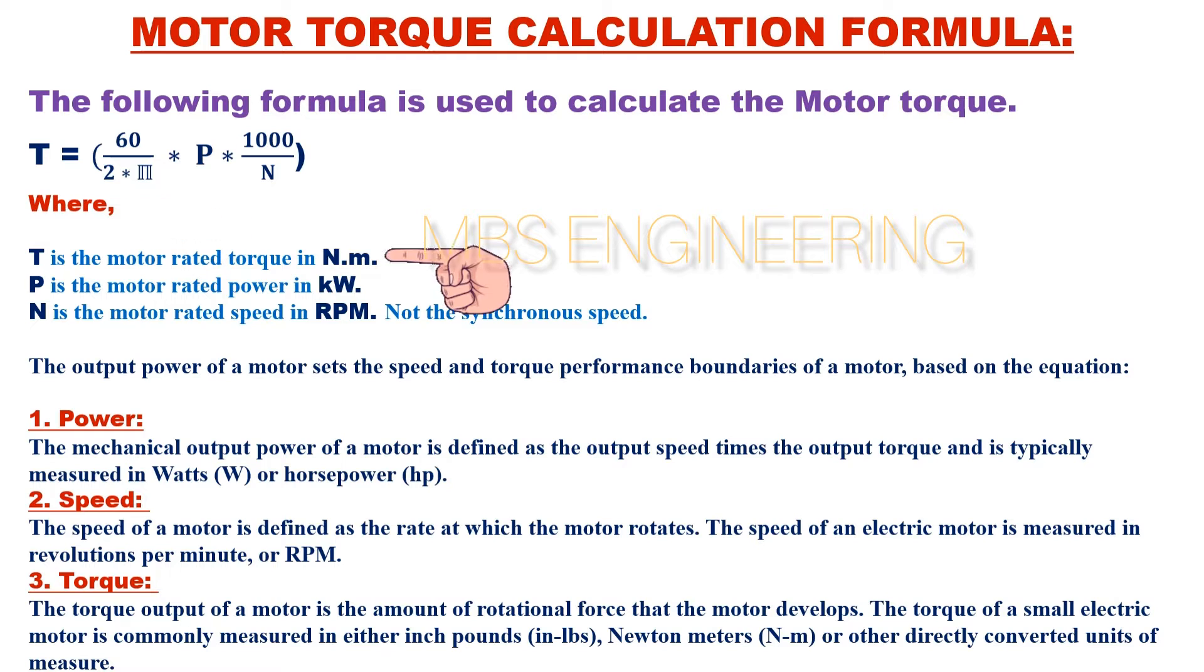Where T is the motor rated torque in newton meters, P is the motor rated power in kilowatts, N is the motor rated speed in RPM or revolutions per minute. It is not the synchronous speed.